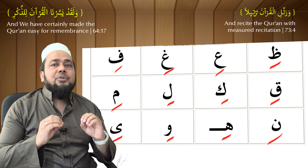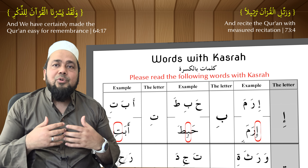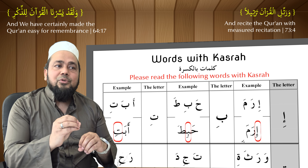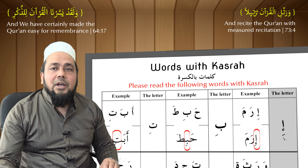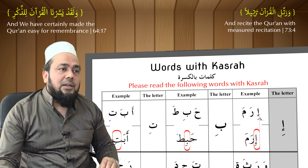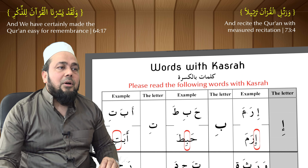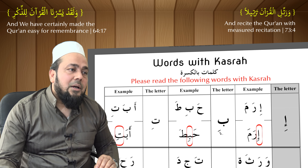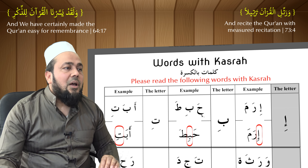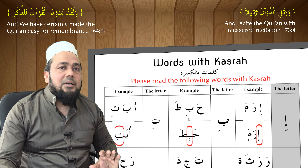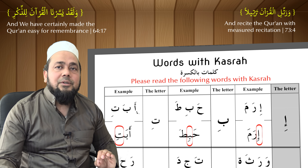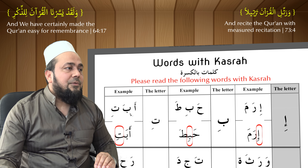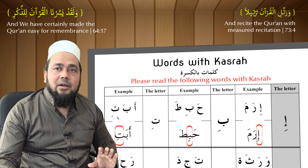MashaAllah. My dear learners, I hope you listened carefully. Now I'm going to show you some words from the Holy Quran and show you how to use kasra on these words. Let's take a look. Ba — kasra — 'bi'. Ta — kasra — 'ti'. Alif — fatha — 'aa'. Ba — fatha — 'ba'. Ta — kasra — 'ti'.